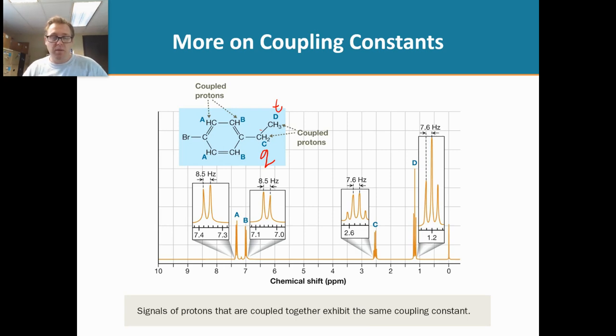Now what's so cool about the J-coupling constants is that you hear the word coupling, right? So if protons are coupling, so when we look at these two protons here, or two sets of protons, C and D protons are coupled to one another. And so look at the J constant, 7.6, 7.6.